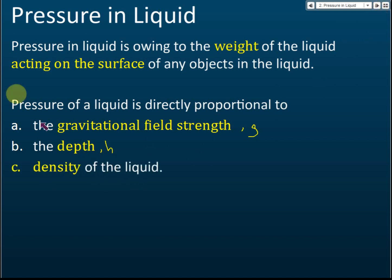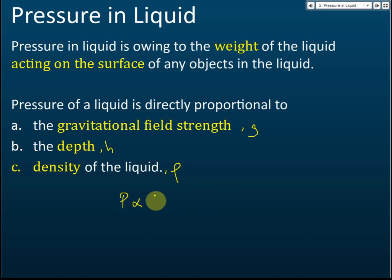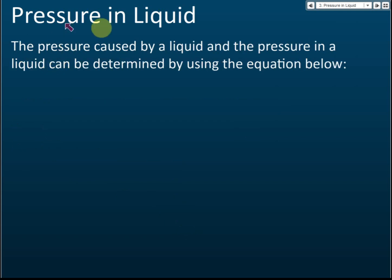The third factor is the density of the liquid, usually denoted by the symbol rho. So pressure in liquid is directly proportional to the depth, the density, and the gravitational field strength. The pressure caused by a liquid and the pressure in a liquid can be determined using the equations below.